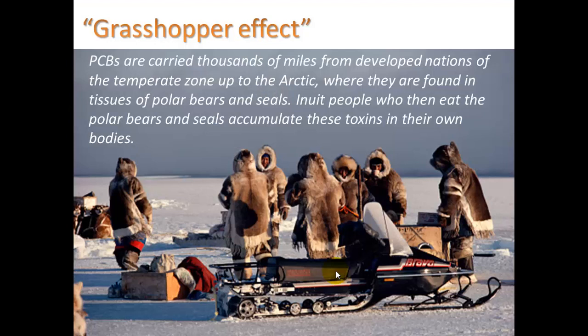Let's talk about the grasshopper effect. The Inuit people have the highest body burden of synthetic chemicals of anyone on the planet — meaning they carry the most chemicals in their tissues. One of particular concern is PCBs, an industrial chemical used in electronics as an insulating liquid that also helps transfer heat. For example, transformers hanging from telephone poles contain PCBs to conduct heat away so they don't overheat. These chemicals are developed and used in industrialized temperate regions, but they travel to the poles, concentrate, and enter the Inuit food chain.